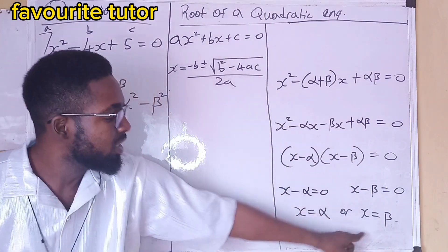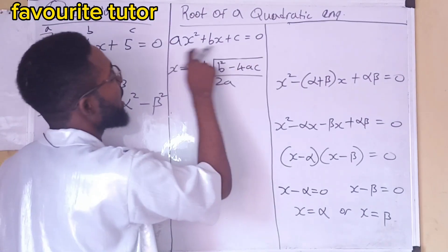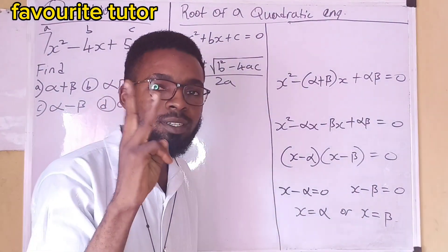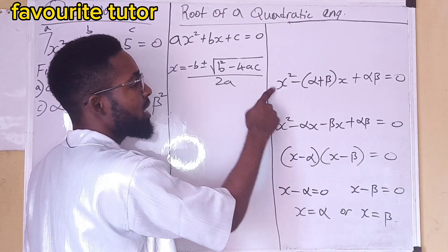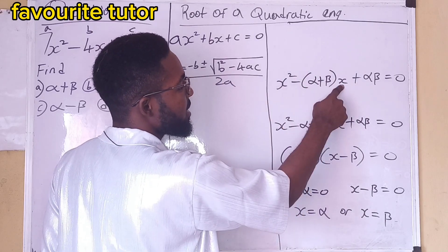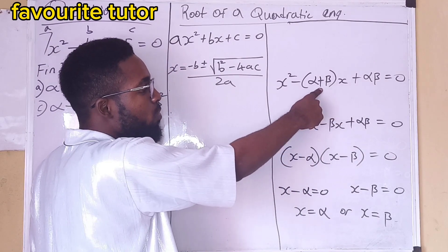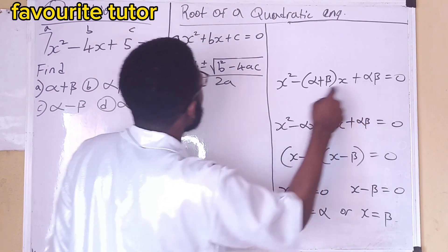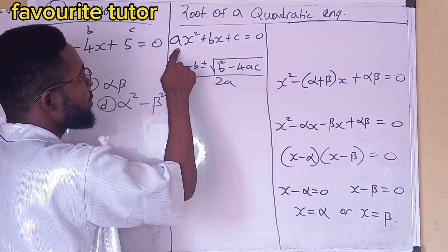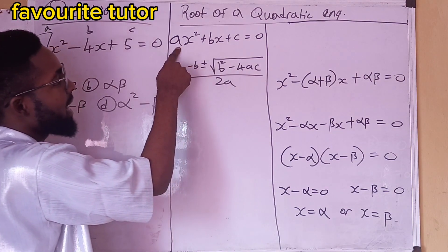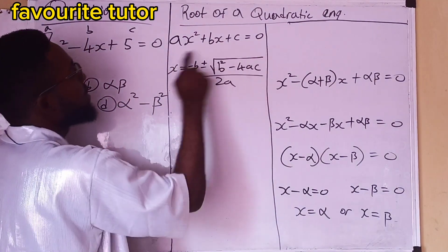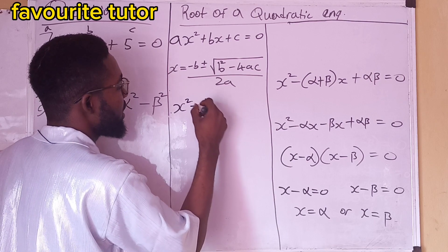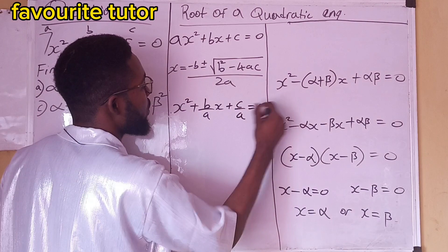I can derive the equation using the roots. Now, looking at this equation, we are going to make the coefficient of x squared equal to 1 by dividing both sides by a. If I divide both sides by a, I get x squared minus (b/a)x plus (c/a) equals 0.